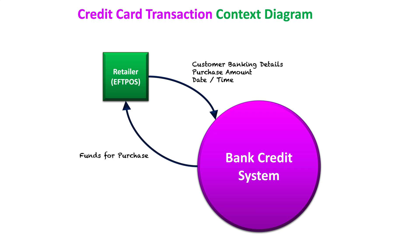As an overview, this context diagram looks pretty simple and straightforward. This flow takes place virtually the same for a debit transaction. It's what happens within the banking credit system after that makes it a batch process — and we'll be able to see that better with a data flow diagram.